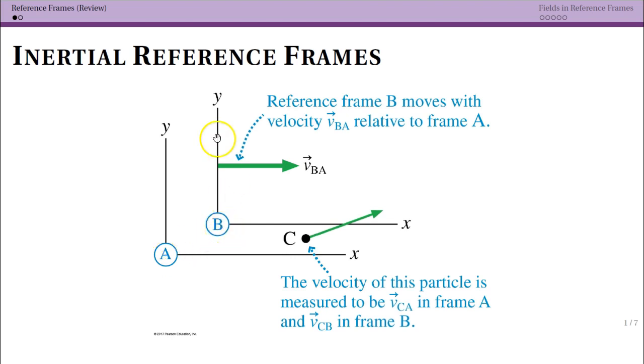Now this reference frame B is moving with a velocity with respect to A, and so we call that V sub BA, so B with respect to A. Now if we have some sort of physical thing occurring, for instance the motion of a particle, we can measure this motion in these two different reference frames and the value we're going to get for instance for the velocity is going to have a different value.